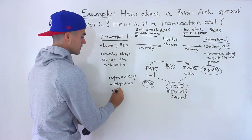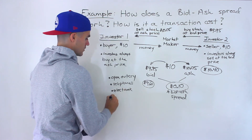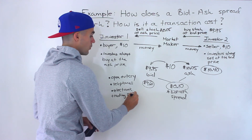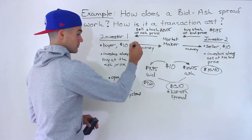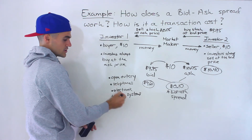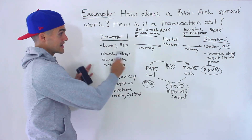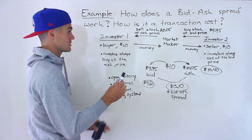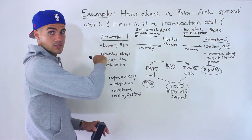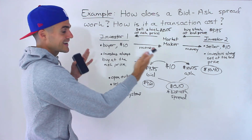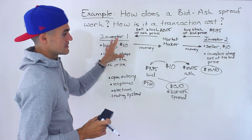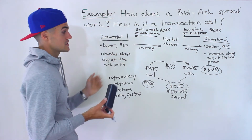Electronic trading systems decreased the holding time even further. With more and more technology, the bid-ask spread keeps getting tighter. In the future, who knows — maybe it won't even exist, and you'll just buy at $10 and someone will sell at $10, instantly connected by technology. But for now, there still is a bid-ask spread, and if you have a trading account you'll see it.